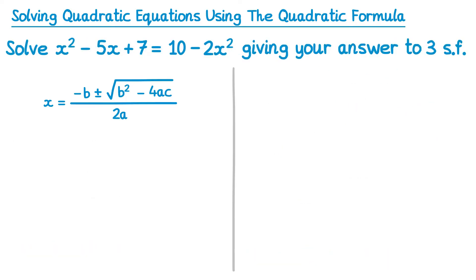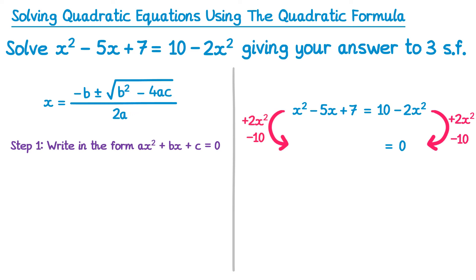This next question is a little more difficult. The first step is to write it in the form ax squared plus bx plus c equals 0. Last time it was already in this form, but this time it's not. You can tell because the right hand side is not equal to 0. Instead we have 10 minus 2x squared. To get this to 0, we're going to add 2x squared, and we're going to take away 10, to remove those terms. That would mean the right hand side is equal to 0, and we should do the same to the left hand side, so add 2x squared and take away 10.